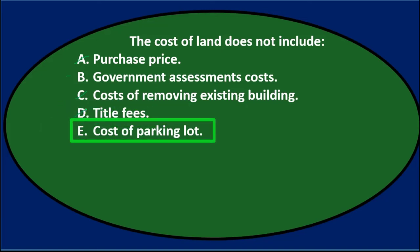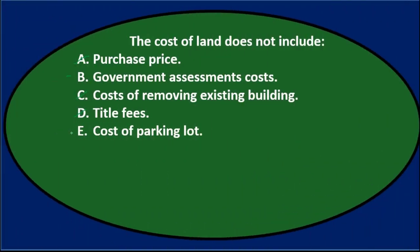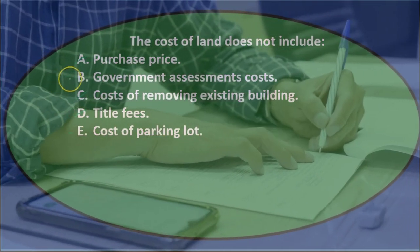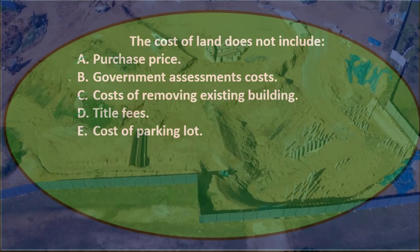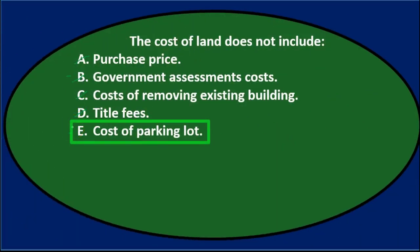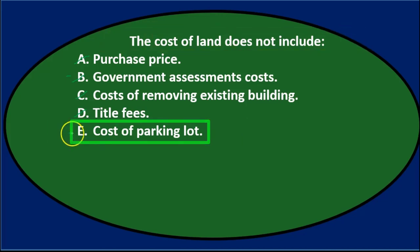Then E, the cost of a parking lot — a parking lot is probably going to be an improvement. If we plan on keeping it, it's probably recorded separately because we need to depreciate it. So going back to B and E: if government assessment costs were part of the purchasing process, they'd still be part of the cost of land. The parking lot, however, would be different — it would depreciate and go down in value over time. So the answer: the cost of land does not include E, cost of the parking lot.